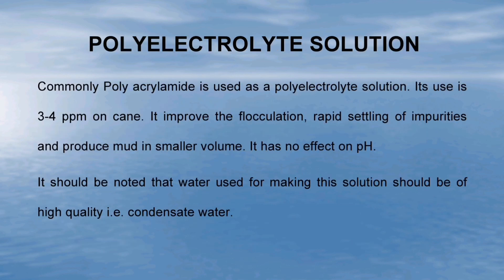Now we see what are the benefits of high molecular weight polyelectrolyte solution for juice clarification. Commonly, polyacrylamide is used as a polyelectrolyte solution at 3 to 4 ppm on sugarcane. It improves flocculation, rapid settling of impurities and produces mud in smaller volume. It has no effect on pH. It should be noted that water used for making this solution should be of high quality, i.e., condensate water.